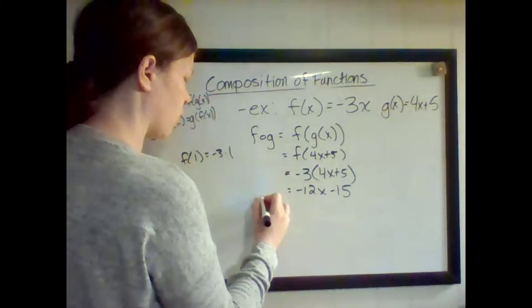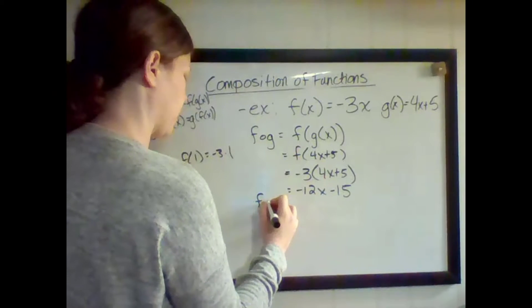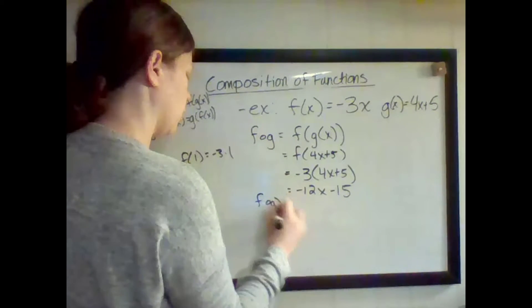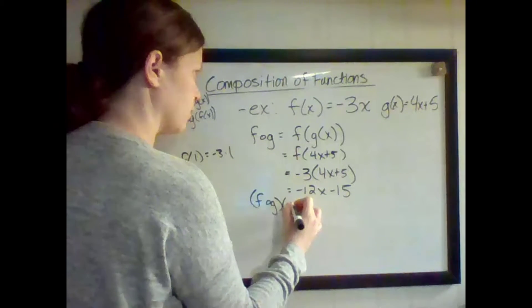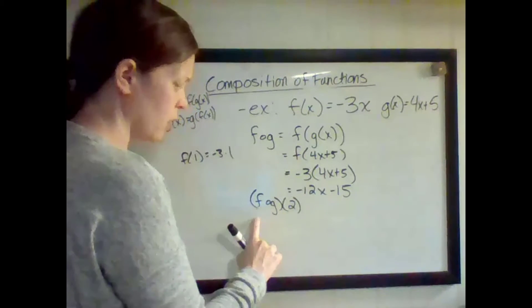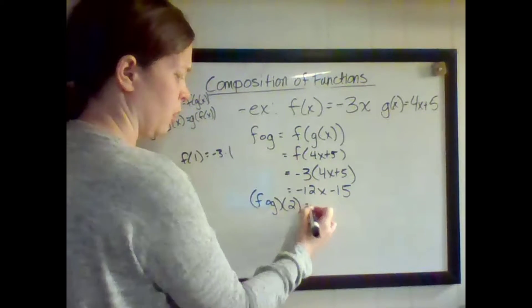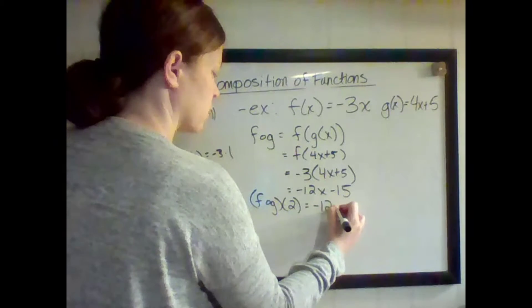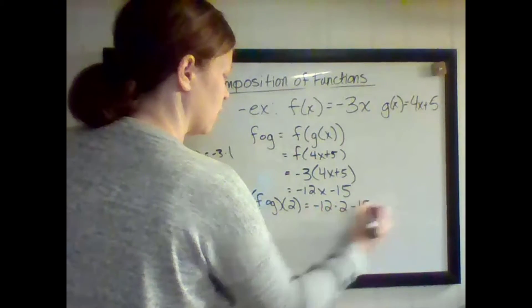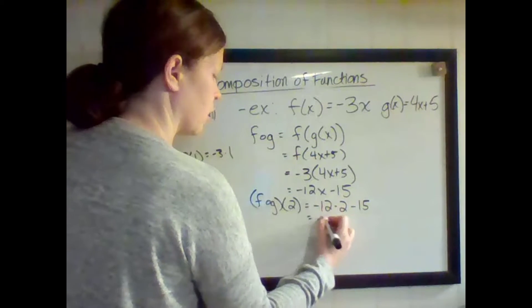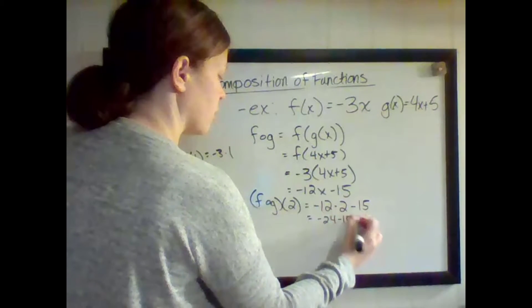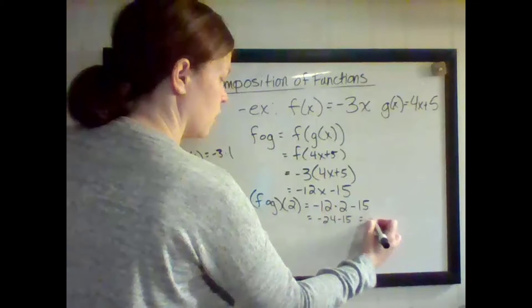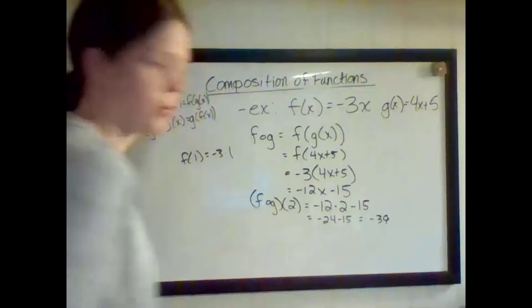So now let's say we do a number. F of G of 2. So I'm asked to find F of G of 2. Well, now that I have this, I could just plug in 2 where I see X. Negative 12 times 2 minus 15. So that's going to be negative 24 minus 15 is negative 39.